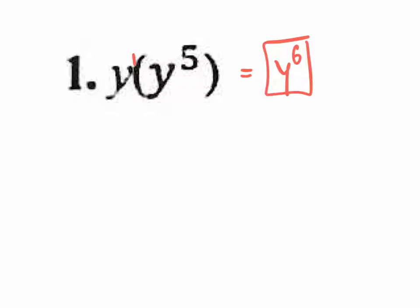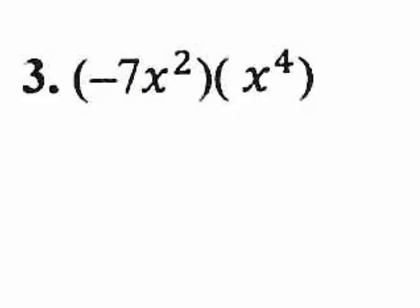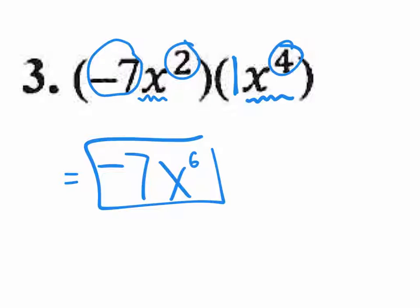Let's jump to number three. On number three we have coefficients — those are the big numbers in front of the letter. Even though you see the parentheses here, there's nothing to distribute inside, so it's really just a multiplication problem. You have a negative 7 and an invisible 1 in front of the X. Negative 7 times 1 is negative 7, and X squared times X to the fourth — you add the exponents — gives you X to the sixth.